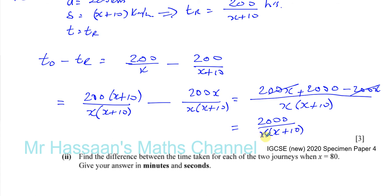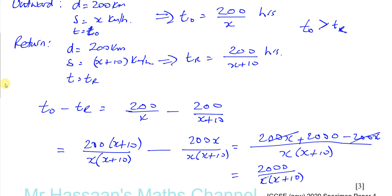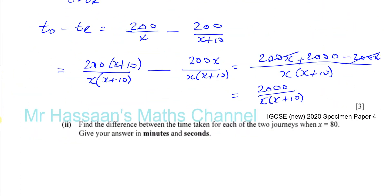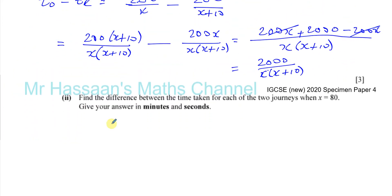Okay, so the question looks a bit complicated. A lot of students are afraid of such questions. But if you just keep your cool about yourself, you'll be fine. If you practice lots of questions like this, you'll be absolutely fine. No problems whatsoever. Okay, then it says find the difference between the time taken for each of the two journeys when x equals 80.